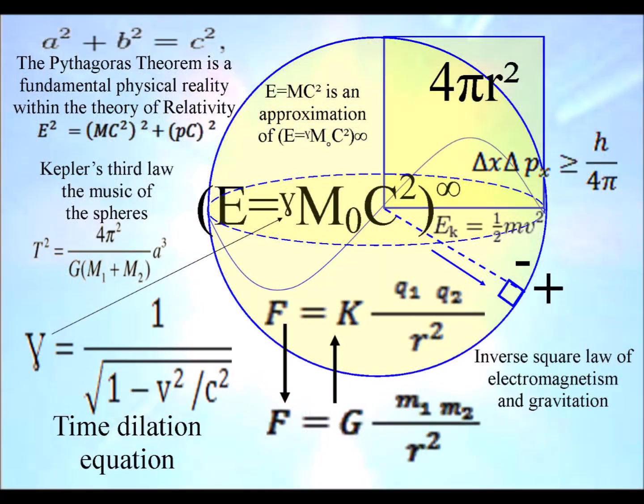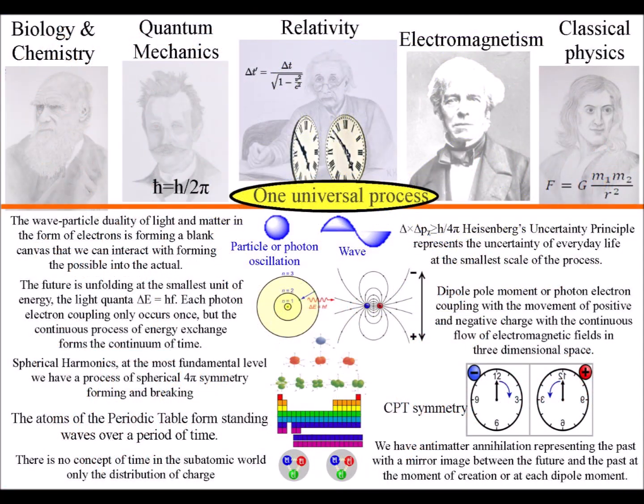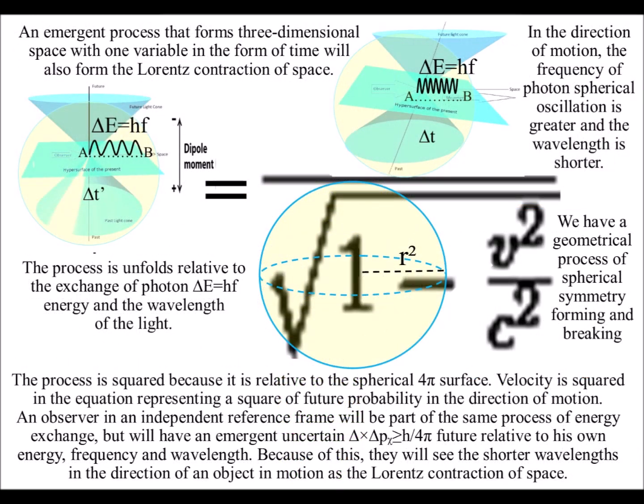An emergent process that forms three-dimensional space with one variable in the form of time will also form the Lorentz contraction of space. This is because the process unfolds photon by photon, relative to the wavelength of the light.